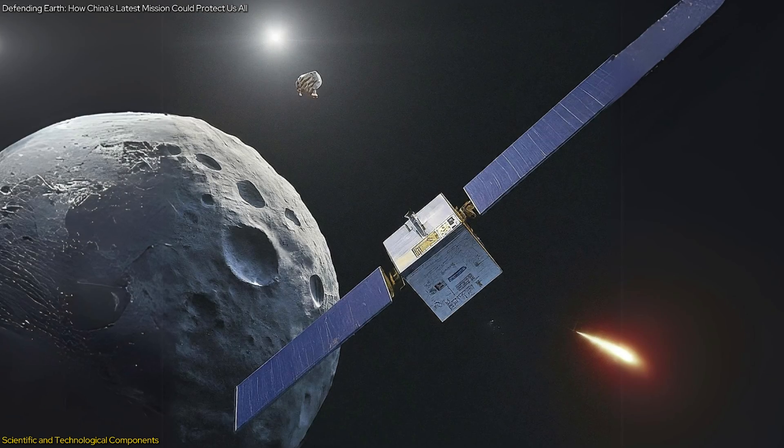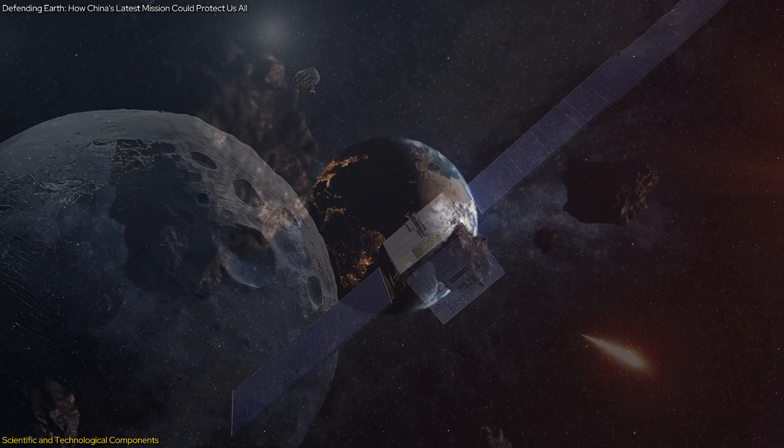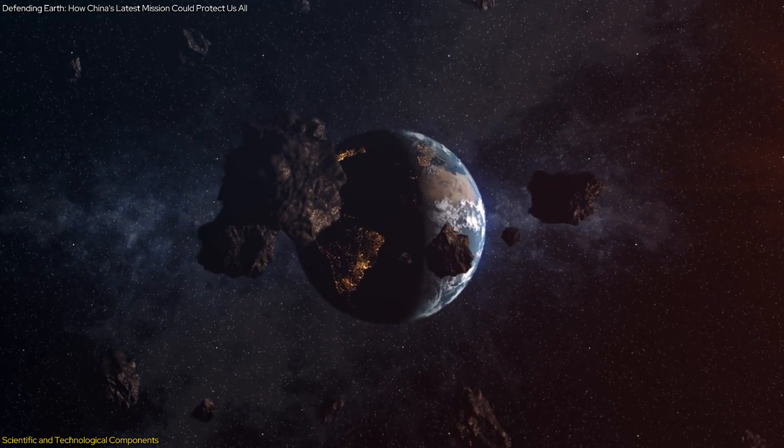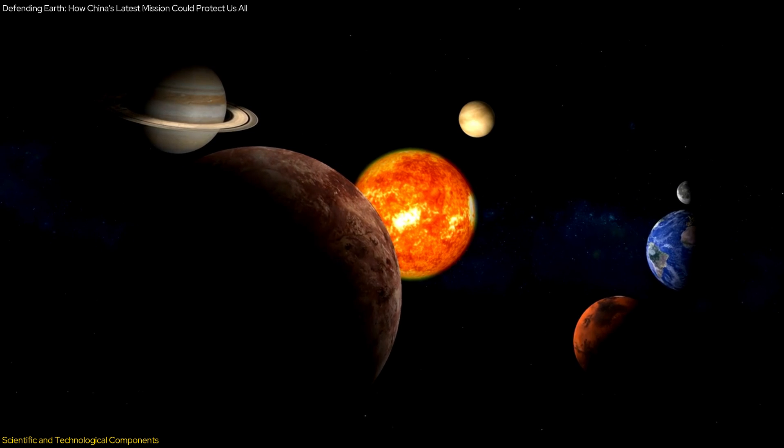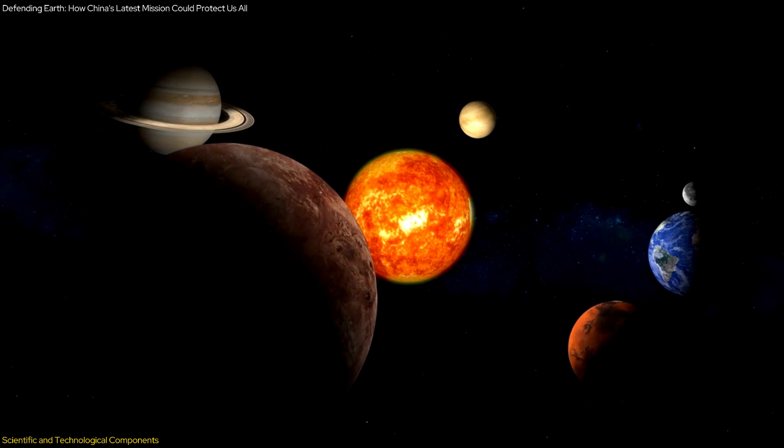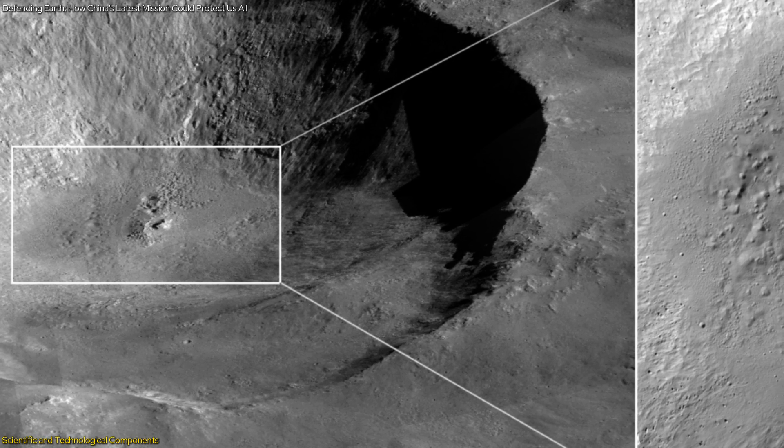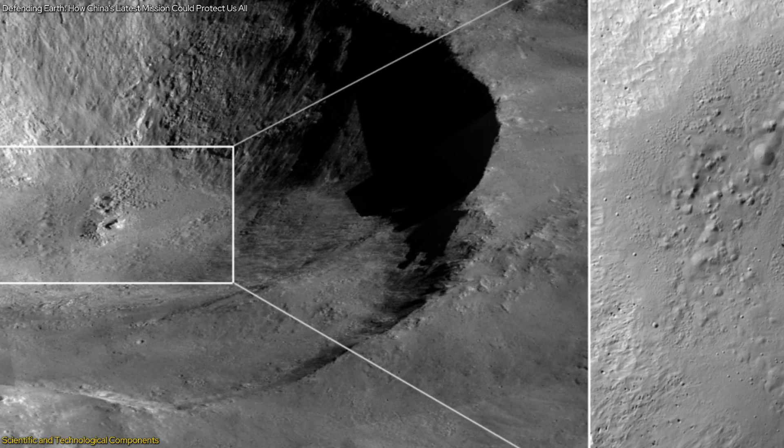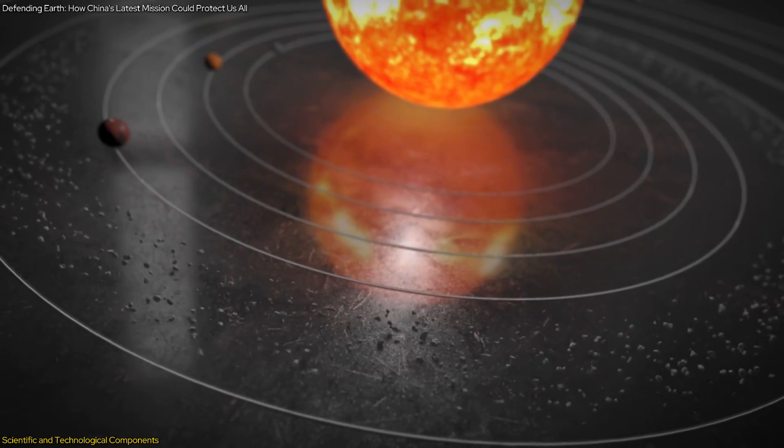The mission's scientific goals extend beyond merely observing the impact. By studying the asteroid's dynamic evolution, origin, and orbital history, scientists hope to gain valuable data on asteroid populations and their interactions with planets. This information could provide crucial clues about the early solar system and the processes that shaped it. For instance, understanding the presence of volatiles on the asteroid can offer insights into the primordial materials that were present during the formation of the solar system.